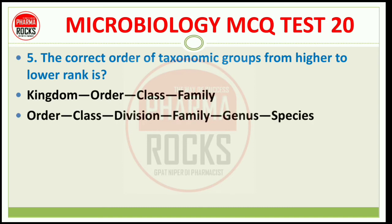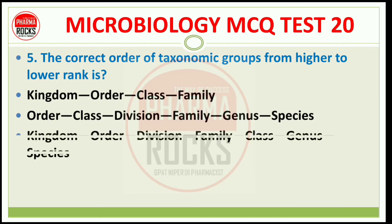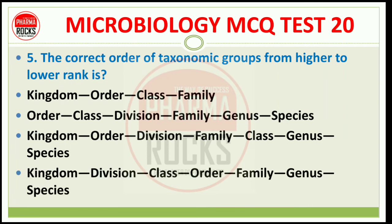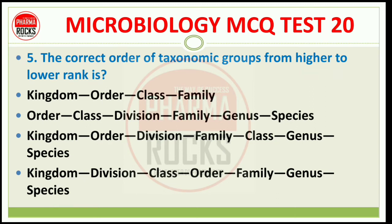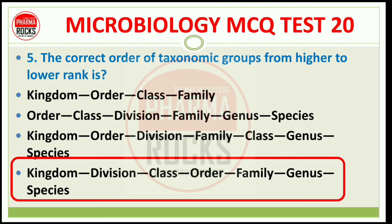यहाँ पर taxonomic groups दिये हैं जो microorganism का classification देता है. Correct sequence from higher to lower rank — right answer is option D: Kingdom, Division, Class, Order, Family, Genus, and finally Species. The taxonomists have made the classification based on two qualities: stability and predictability. यहाँ से भी MCQ बन सकता है.